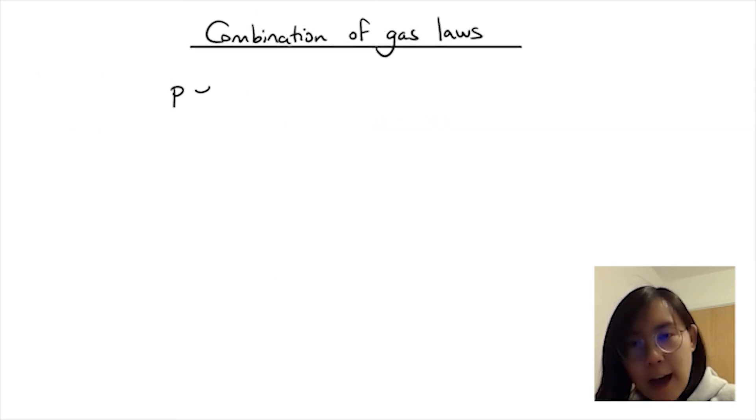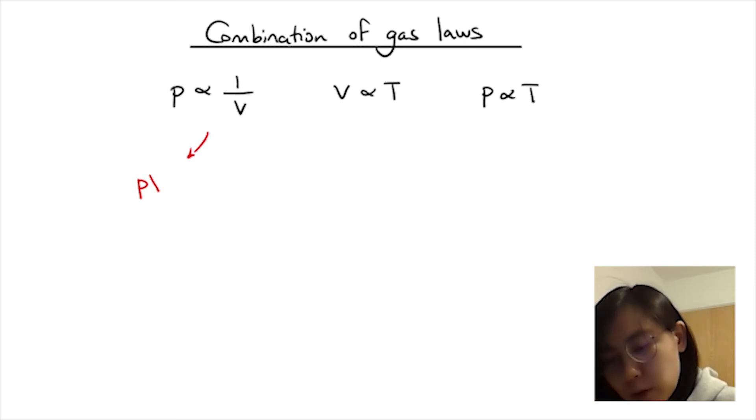So here we have all three gas laws. Now let's combine all three. From Boyle's Law, we know that PV is constant. From Charles' Law and Gay-Lussac's Law, both volume and pressure are proportional to temperature. Why don't we take their products, multiplying them together, and say that they are proportional to temperature. So taking T to the left-hand side, that's going to equal a constant.